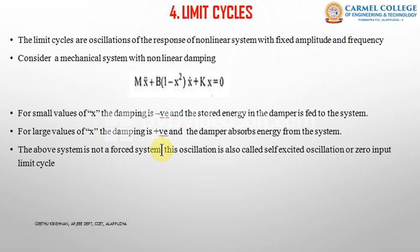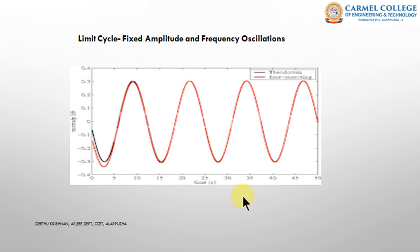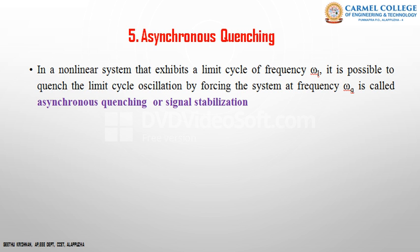In the case of limit cycle, the input is equal to zero and the oscillations are self-excited — that is, without any input. The figure of a limit cycle shows oscillations with fixed amplitude and frequency, where the amplitude and frequency of all oscillations are the same. The next characteristic is asynchronous quenching. If a system has a limit cycle with frequency ωL, it is possible to quench — that is, stop or eliminate — that frequency by inserting another signal of frequency ωQ.